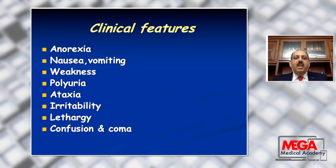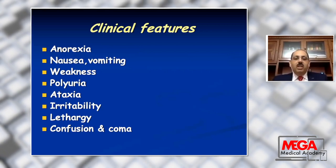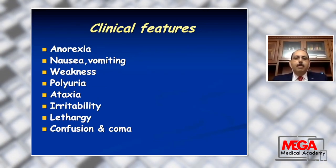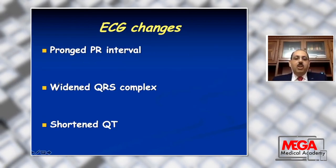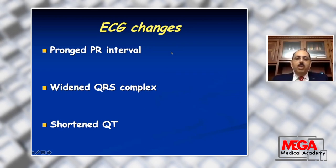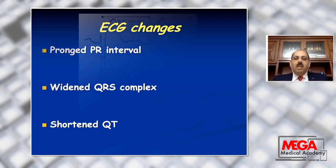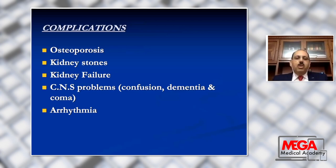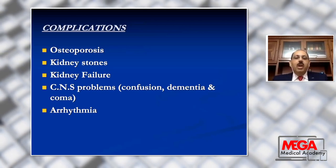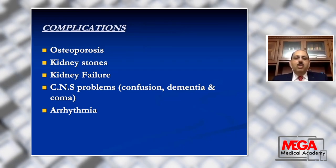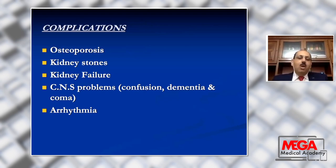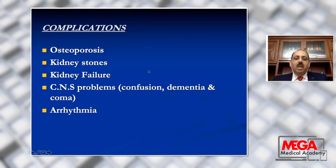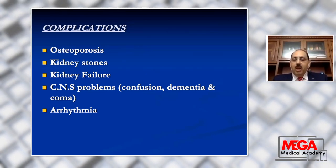The clinical features start with anorexia, nausea, vomiting, weakness, then polyuria, ataxia, irritability, lethargy, confusion, and coma. ECG changes include a short QT interval, prolonged PR interval, and wide QRS complex. Complications include osteoporosis or bone rarefaction with liability to fracture because of increased calcium in the blood with decreased deposition in bone. Also, increased deposition of calcium in the kidney results in kidney stones and kidney failure, CNS problems such as confusion, dementia, and coma, and arrhythmia may occur.